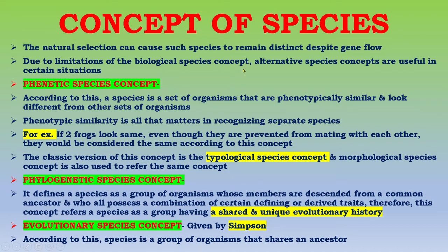Due to the limitations of the biological species concept, alternative species concepts are useful in certain situations. The next concept is the phonetic species concept. According to this, a species is a set of organisms that are phenotypically similar and look different from other sets of organisms. Phenotypic similarity is all that matters in organizing separate species. For example, if two frogs look the same even though they are prevented from mating with each other, they would be considered the same species according to the phonetic species concept. The classic version of this is the typological species concept, also referred to as the morphological species concept.